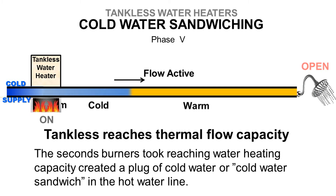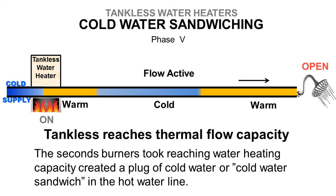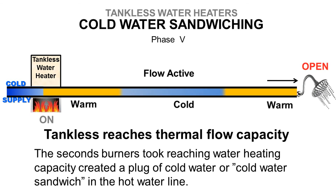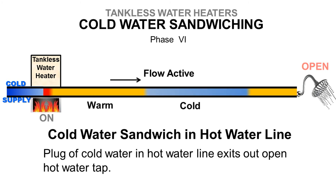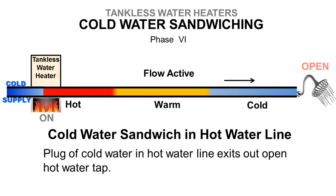Phase 5: The tankless water heater reaches thermal flow capacity to heat water, but a plug of cold water is sandwiched between warm water and travels through the hot water line. The seconds the heater took to reach thermal flow capacity allowed cold water to enter the hot water line. Phase 6: The plug of cold water in the hot water line exits out of the open tap.